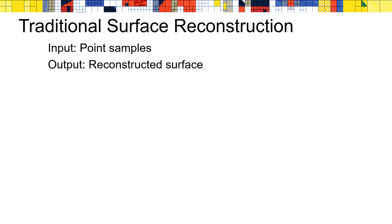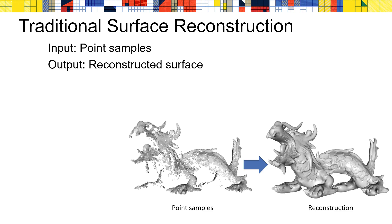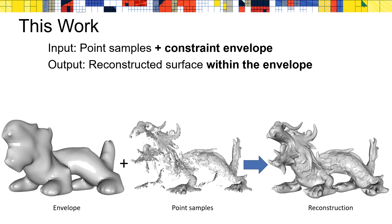Surface reconstruction has been a well-studied problem for several decades. In general, the problem can be stated as follows: given a set of input point samples, reconstruct a surface that passes through or near the points. In this talk, we will consider an extended version of this problem. Consider the case where we are given not only a set of input samples, but also an envelope within which the reconstructed surface must lie. Our goal is to reconstruct a surface that passes through or near the samples and is contained within the envelope.